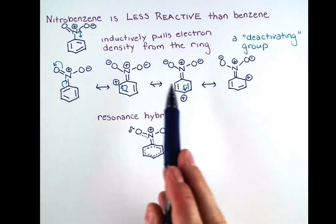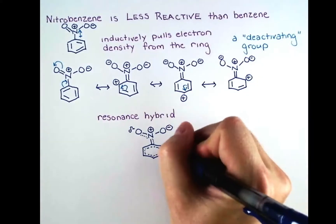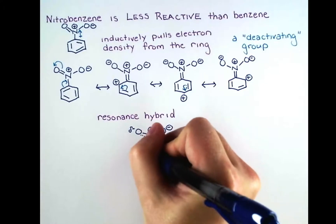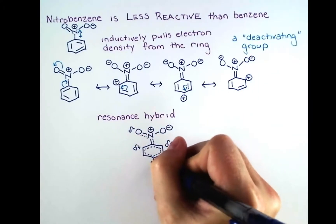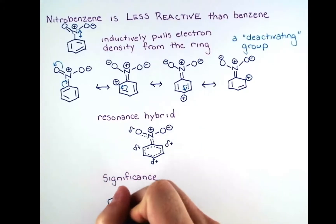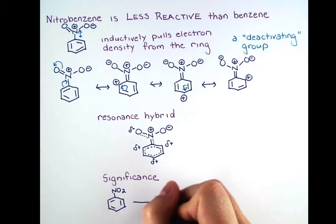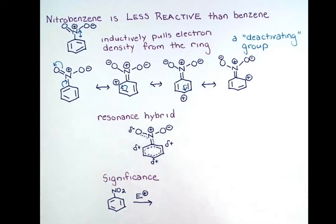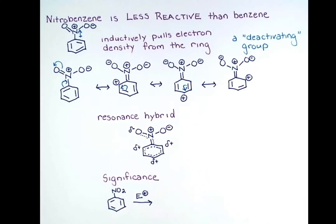Finally, we can put delta-positive charges on three of our carbon atoms that get a formal positive charge in one of our resonance structures, and that generates our resonance hybrid. We can see the significance of this analysis when we react nitrobenzene in an electrophilic aromatic substitution reaction. Electrophiles are positive, so these three carbon atoms with positive character are going to have a repulsive interaction with an incoming electrophile.